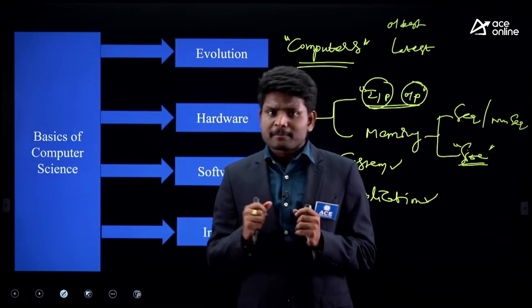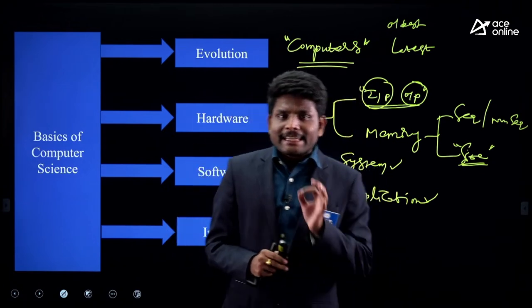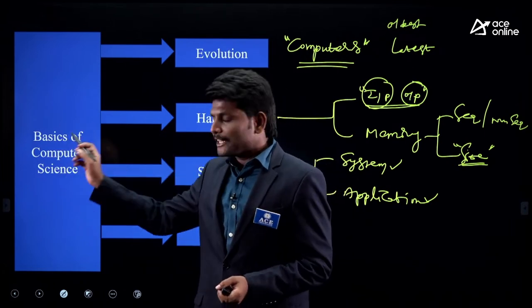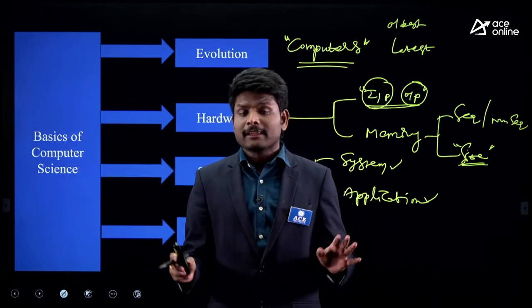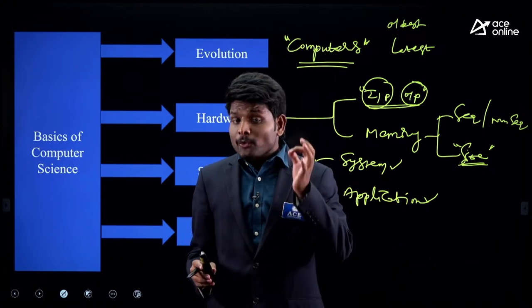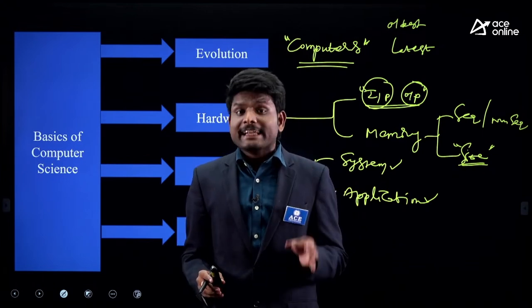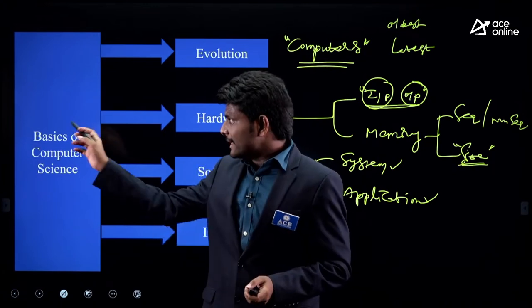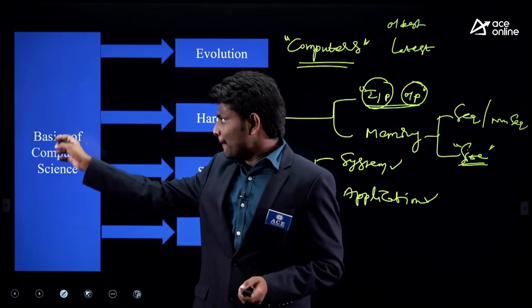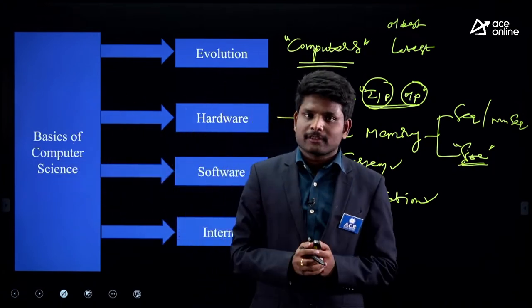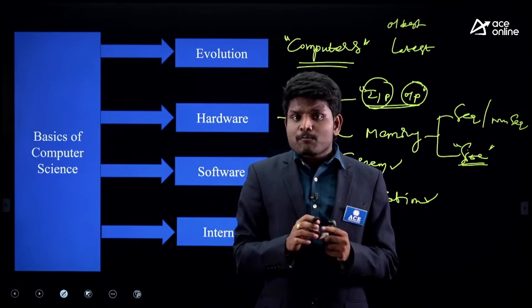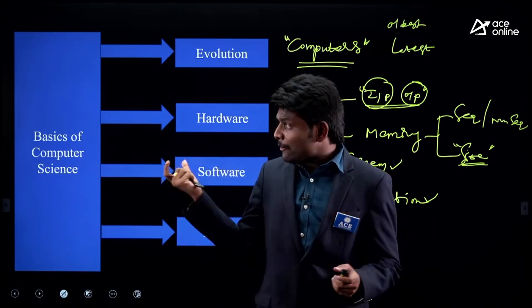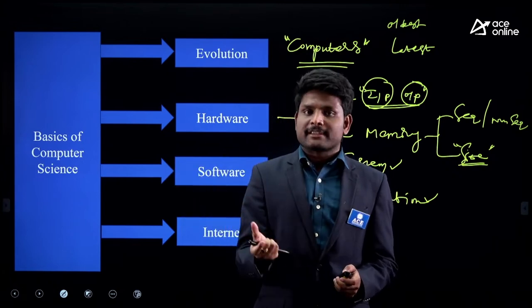So far we've discussed two points: this subject, 'Basics of Computer Knowledge,' is for both CS and non-CS students, and it's not only for RRB JE aspirants — it's for every competitive exam aspirant. In all exams, basic questions are asked from these computer science topics. After analyzing most of the papers, I have segregated and chosen the topics they focus on.